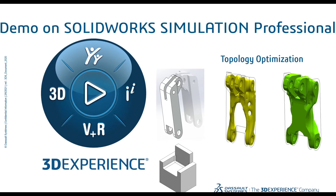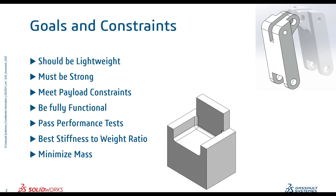We'll deal with our demo on topology optimization, which is part of SolidWorks Simulation Professional. Topology optimization analysis helps to get an optimized component. As you can see, these are a few models which are not taken into this particular case study, and the optimized model shows 50 percent and 70 percent weight reduction with respect to stiffness.